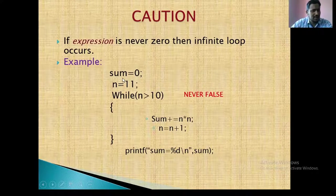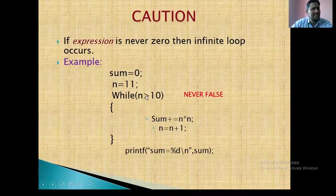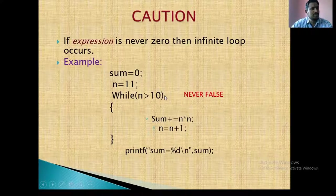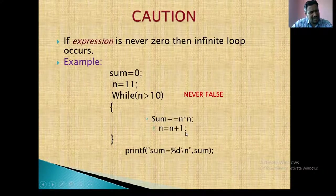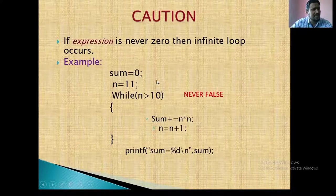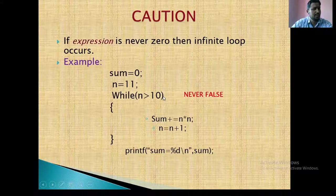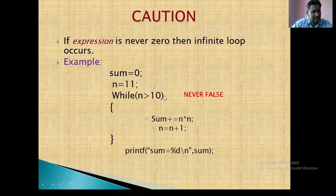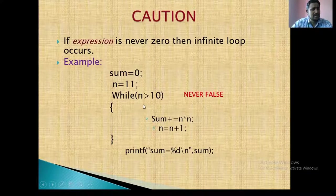So in this example I am assuming sum equal to 0, n is 11. So 11 is greater than 10, it is true. In true block statement I am increasing, keep on increasing n. So 11, then 12, 13, 14, 15, 16. So 1000 or 10,000, all the n values, the statement is true. That means the expression is never false here. Then it occurs infinite loop.